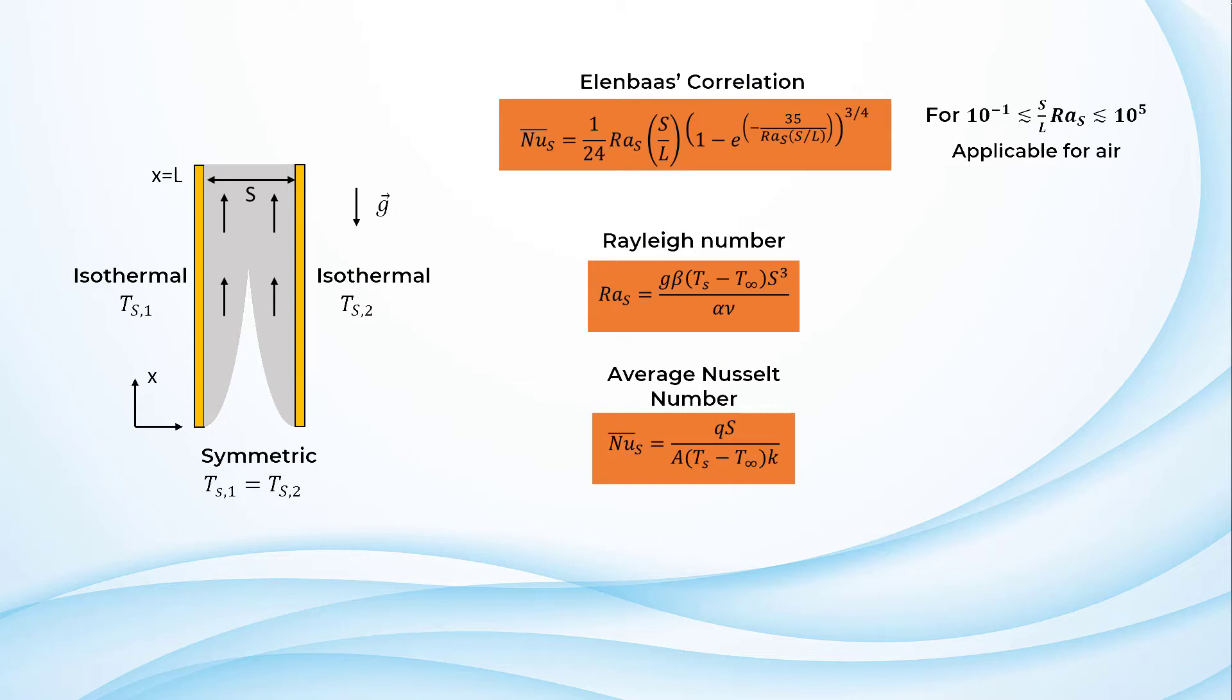For channels where S over L is small, a fully developed limit is reached. At this limit, the correlation for calculating the Nusselt number reduces to the form shown here. The subscript FD refers to the fully developed condition.